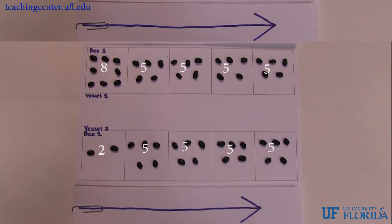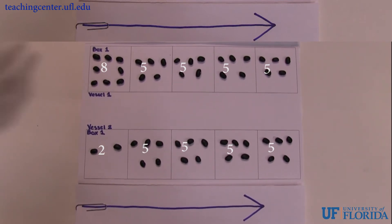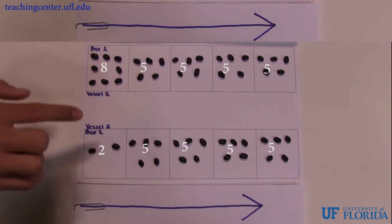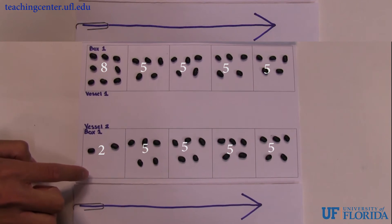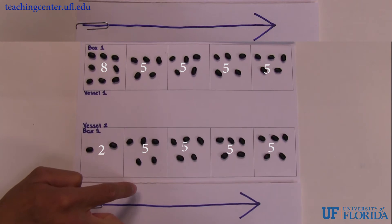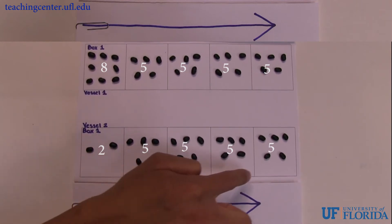In concurrent flow, we will have vessel 1 start off with 8 beans in the first box, and vessel 2 start off with 2 beans in its first box. Notice how both sections quickly reach equilibrium in subsequent boxes, and each box contains 5 beans, the same number of beans throughout.